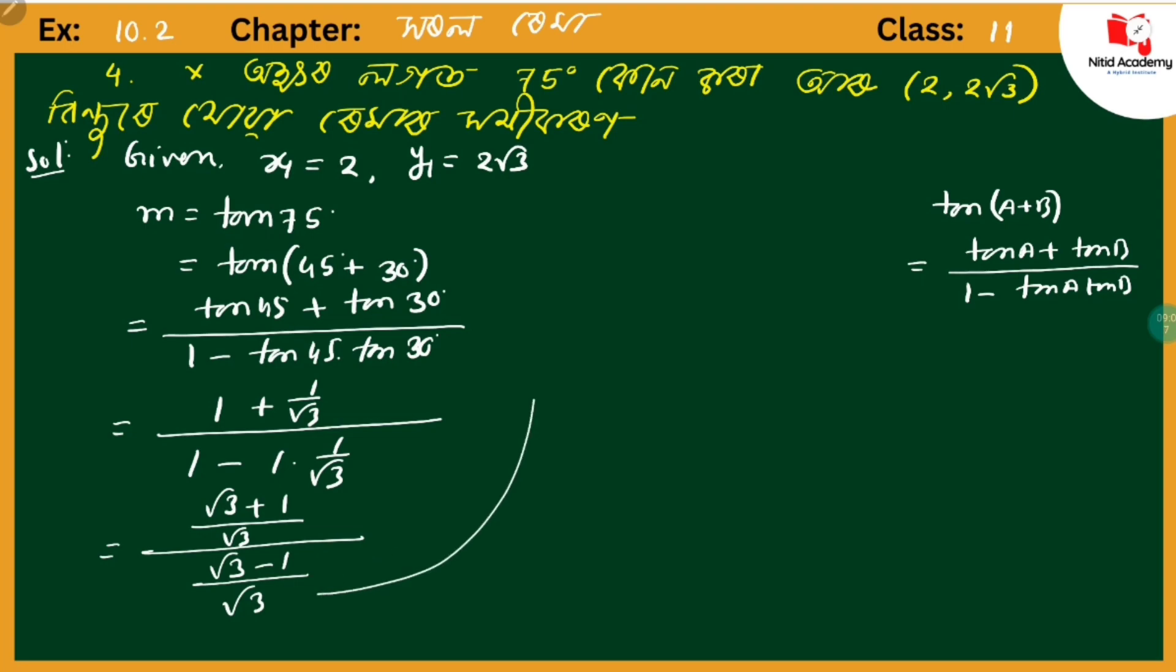We can cancel the √3 terms. This gives us (√3 + 1)/(√3 - 1). So m = (√3 + 1)/(√3 - 1), which is the slope we need to use.